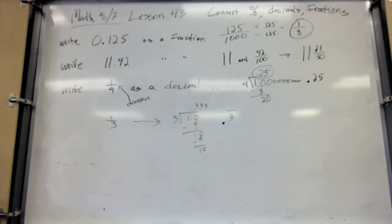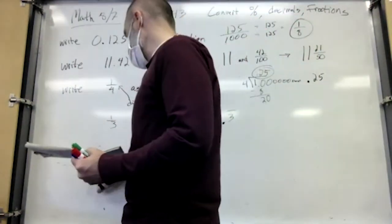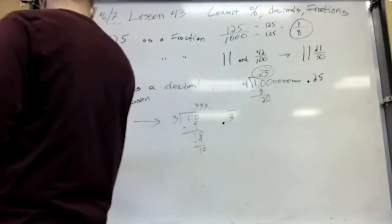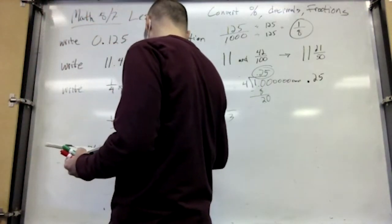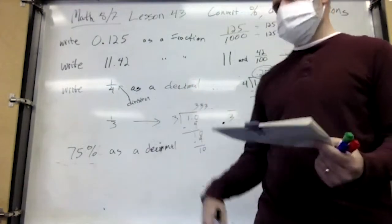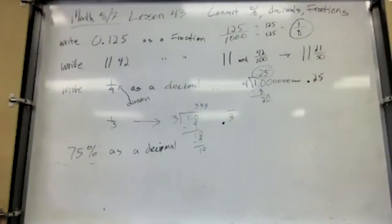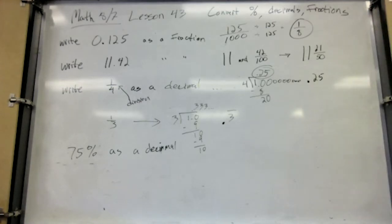Does this feel OK so far? The last conversion we're going to do is writing percentages as a decimal. How do you write 75% as a decimal? 75 over 100. You just wrote it as a fraction. 75 hundredths — because that's what a percentage is, out of 100.